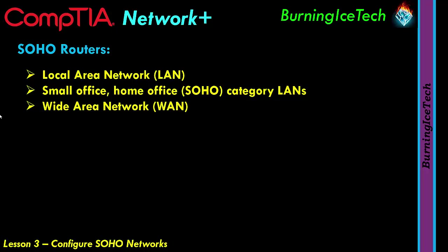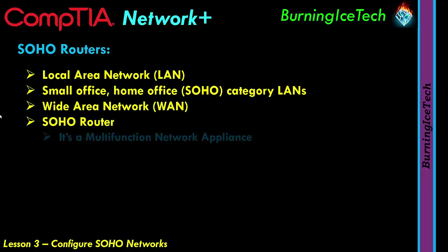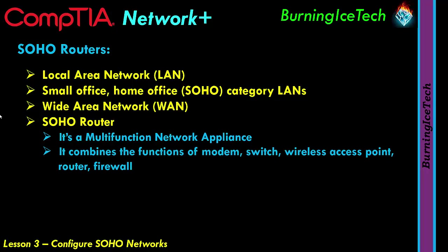The intermediate system powering SOHO networks is usually called a SOHO router because one of its primary functions is to forward traffic between the LAN and the WAN. However, routing is just one of its functions. The SOHO router is a multi-function network appliance — it combines the functions of a modem, a switch, a wireless access point, a router, and even a firewall all into one device.